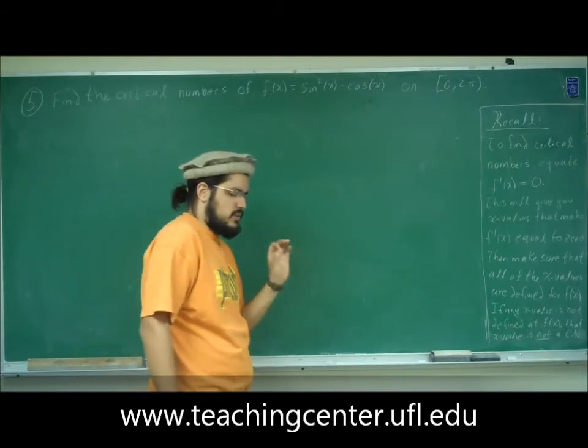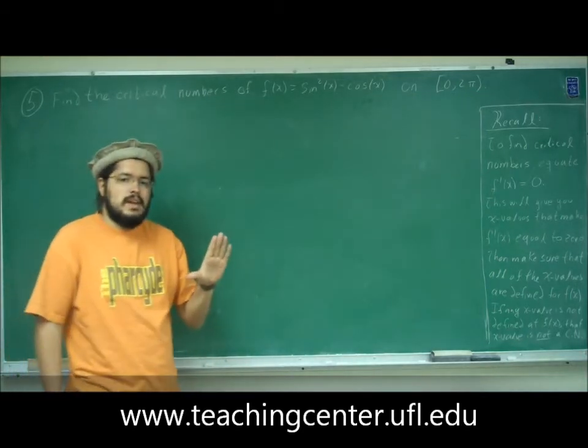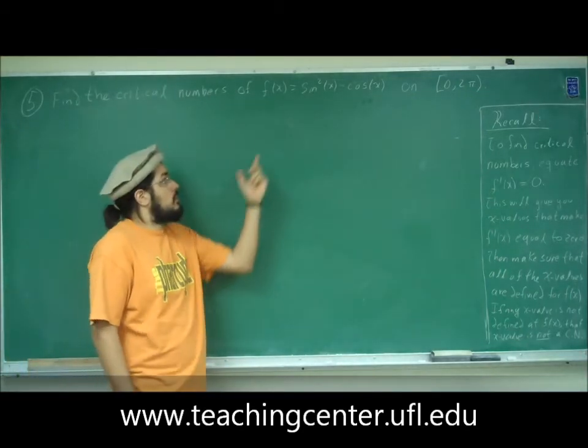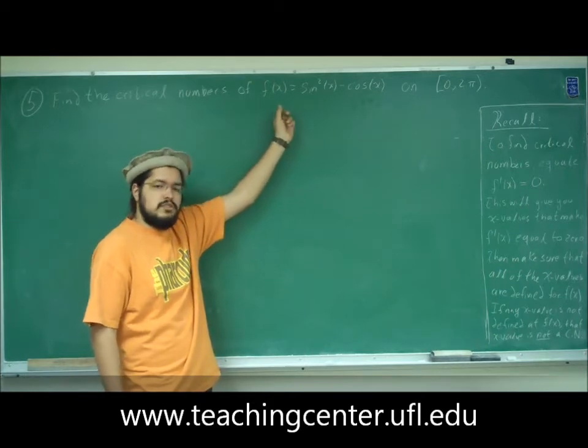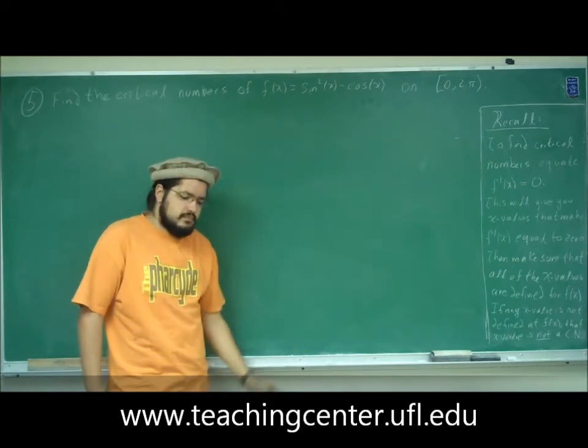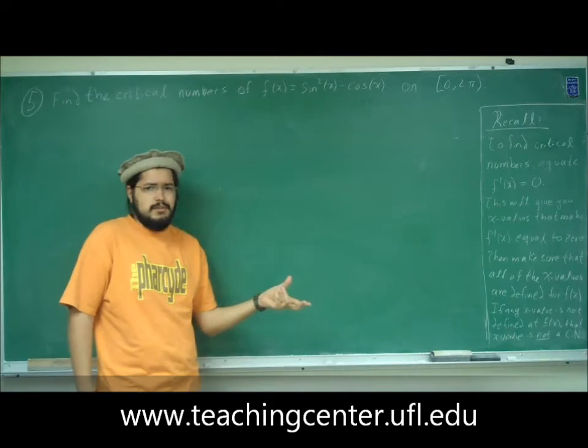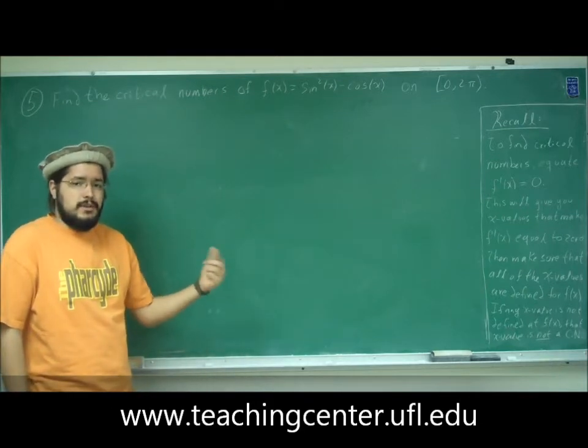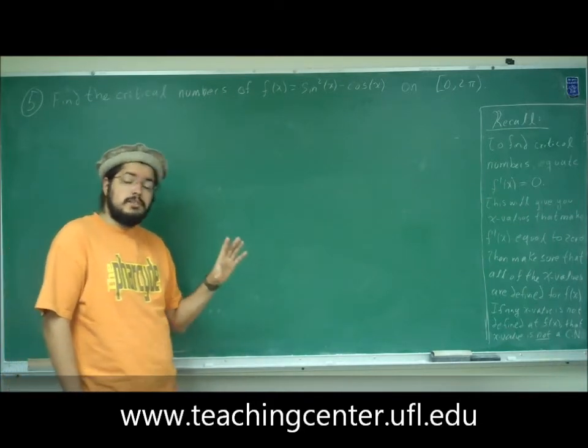Real quick, remember, to find critical numbers, we must equate the derivative, f prime, so the function's derivative, to zero. Once we do this, we'll find x values that will make the derivative equal to zero. These are our possible critical numbers.